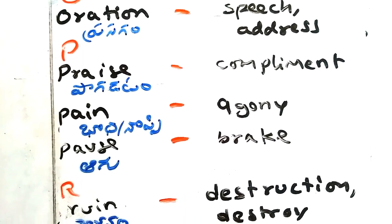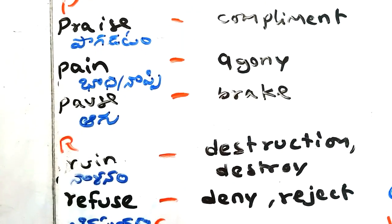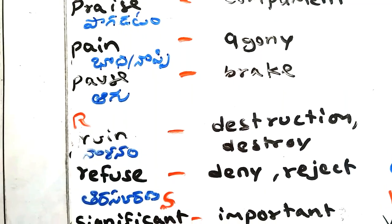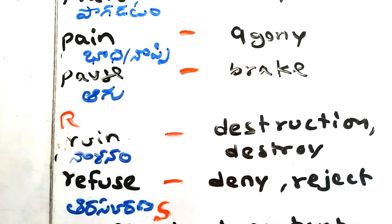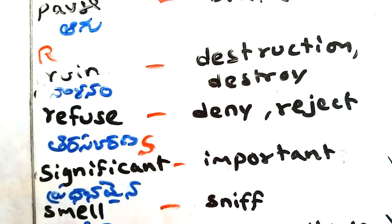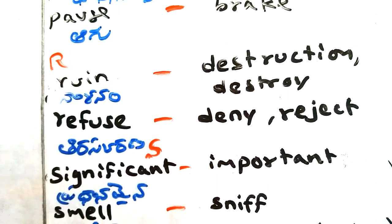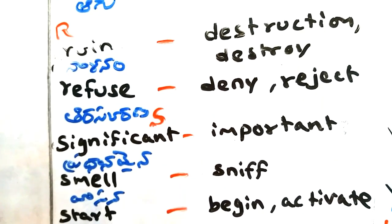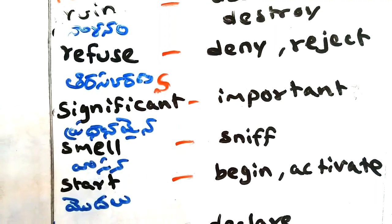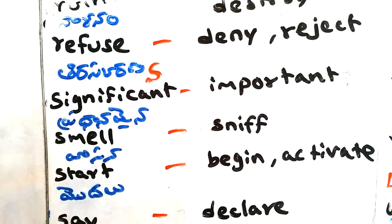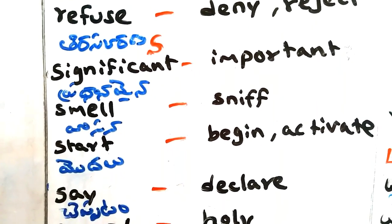Praise - poveratam, compliment. Pain - bada, noppy, agony. Pause - break. Ruin - nashinam, destruction, destroy. Refuse - thiriskarana, deny, reject. Significant - pramad, pradhanamyana, important. Smell - vasa, sniff.